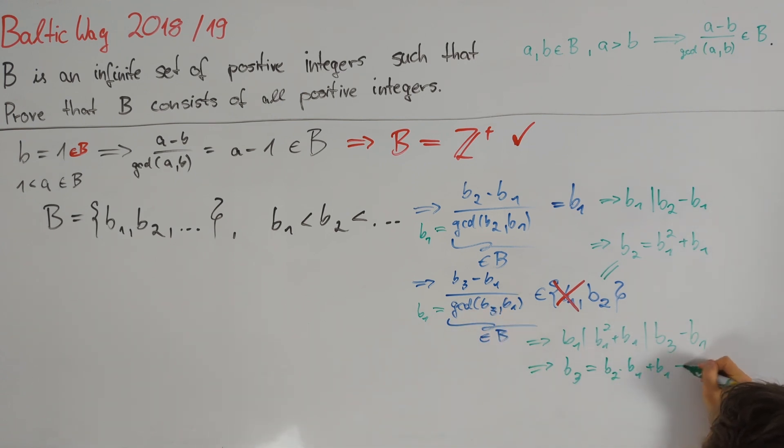The nice thing about considering three numbers, b1, b2 and b3, is that we now also get a third condition, namely using b3 and b2 out of this. Since we already have expressions for b2 and b3 in terms of b1, we can hope that this third condition will give us b1 is equal to 1 to finish our proof.